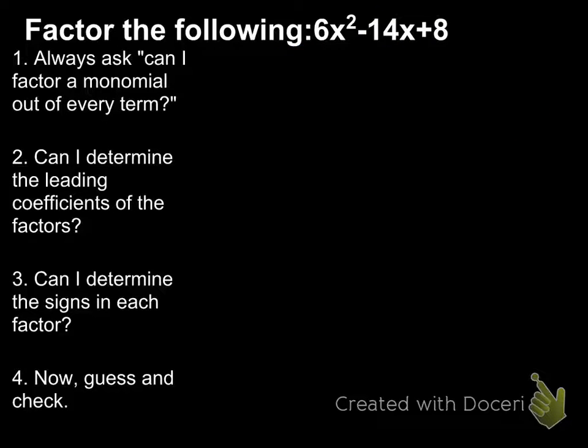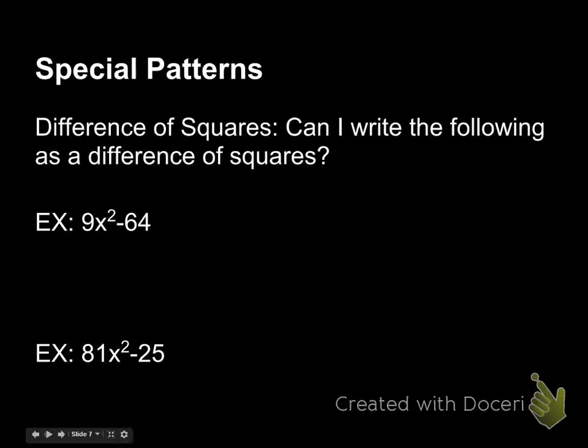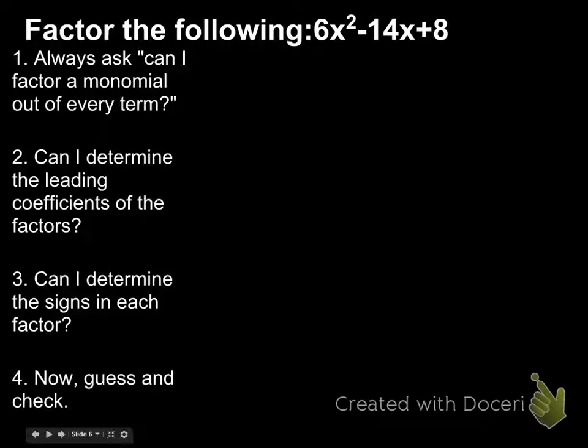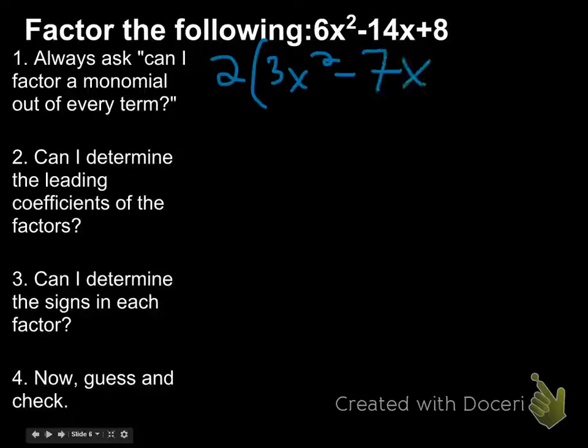Alright. 6x squared minus 14x plus 8. Can I factor a binomial out of each term? Is there something in each term that I can factor out? I beg to differ. Yes. Let's factor a 2 out. I think that I can rewrite this as 2 times 3x squared minus 7x plus 4. How does that help me?